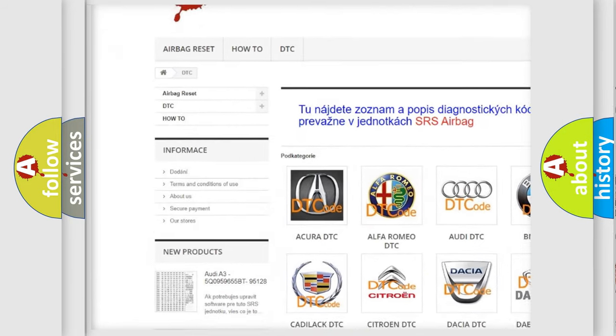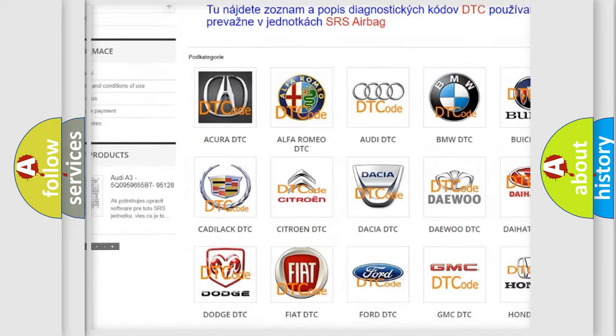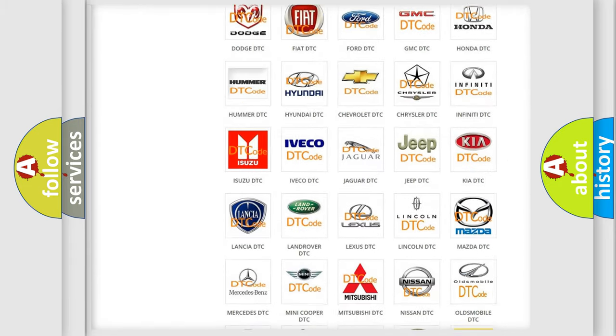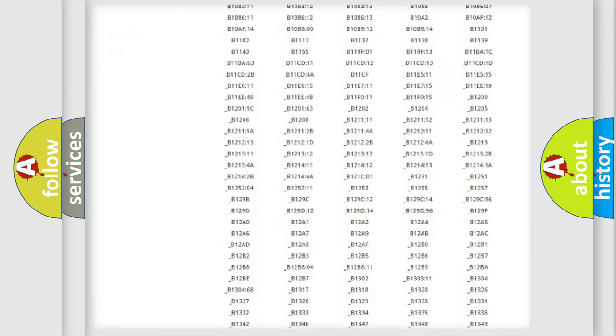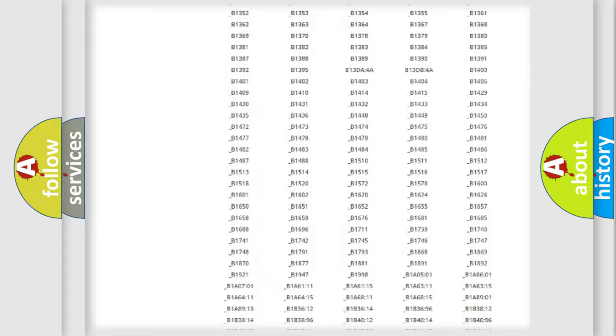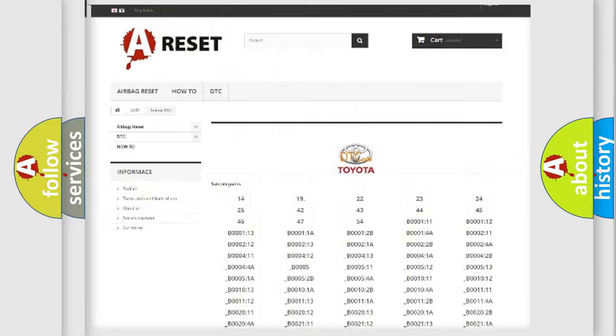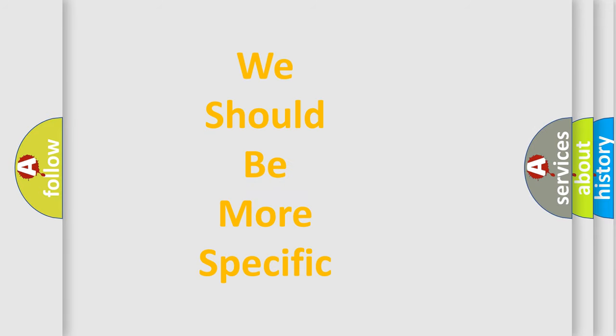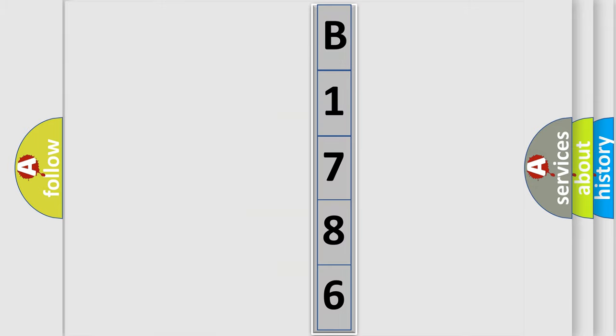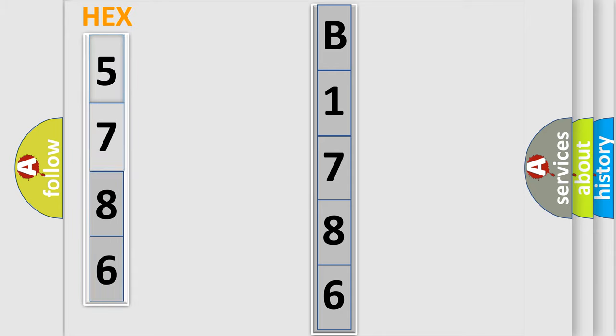Our website airbagreset.sk produces useful videos for you. You do not have to go through the OBD2 protocol anymore to know how to troubleshoot any car breakdown. You will find all the diagnostic codes that can be diagnosed in Toyota vehicles, also many other useful things. The following demonstration will help you look into the world of software for car control units.